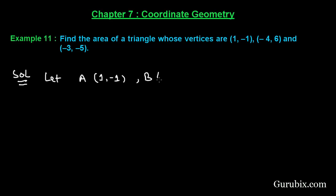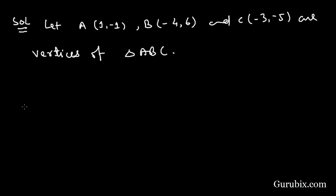B be minus 4 and 6, and C be minus 3 and minus 5 are the vertices of triangle ABC. Therefore